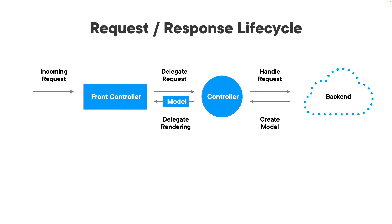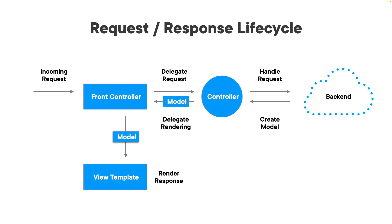Coming back from the controller, we have a model — data that we're going to use to represent the UI. We go back to our front controller and it asks who's going to handle and render this response. We pass that down to some view template. For this course, we're going to use JSPs for one of our views, but we could use FreeMarker, Velocity, or any number of different technologies that integrate nicely with Spring MVC.